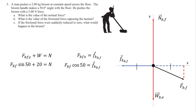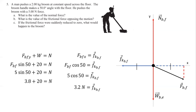The mass is two kilograms, so weight is 20 newtons. The push is five newtons. We have five sine 50 plus 20 equals the normal, and five cosine 50 equals kinetic friction. Solving these, we get 3.2 newtons of kinetic friction and 23.8 newtons for the normal force.